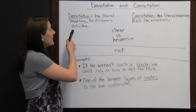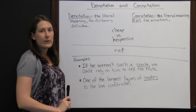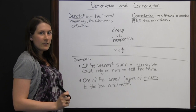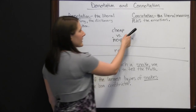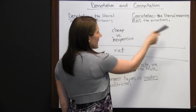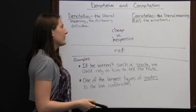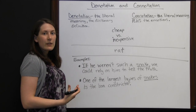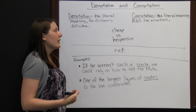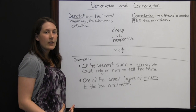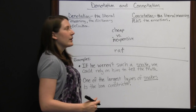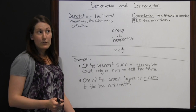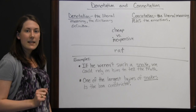Denotation and connotation. Denotation is the literal meaning of a word — the dictionary definition, what you would find in Webster's dictionary. The connotation of a word is the literal meaning plus all the emotions that word might evoke. Connotation is more subjective — if someone has had certain experiences or memories associated with a word, they may feel differently about it than someone who hasn't. So connotation can be different for each reader.